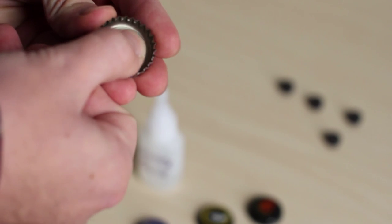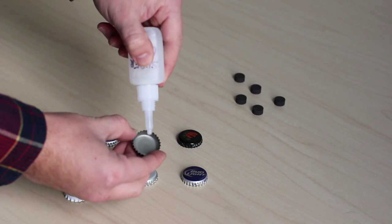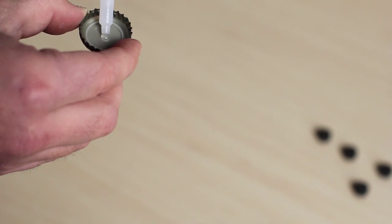Take a bottle cap and make sure the inside of the cap is clean and dry. Then you're gonna take the superglue and put a small dab right in the middle.